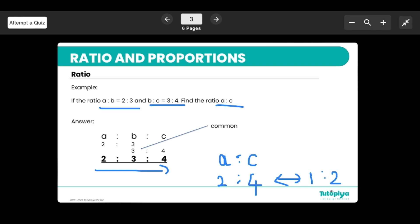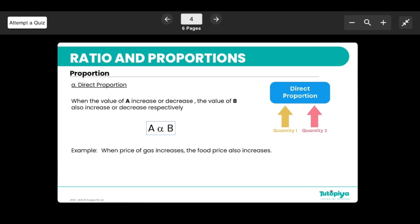Moving on, we have proportion. Proportion basically means: is one value increasing while the other value is decreasing, for example, or increasing and increasing, or decreasing and decreasing? We have an example here: if a is increasing, b will also increase; same way, if a is decreasing, b is also decreasing. If this is the case, then we call this direct proportion.